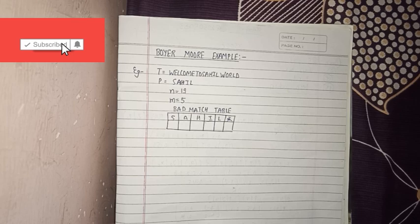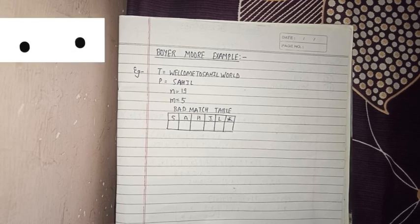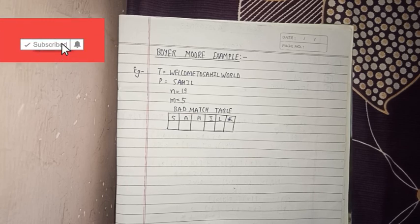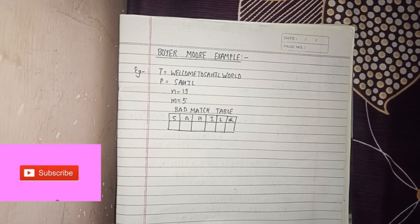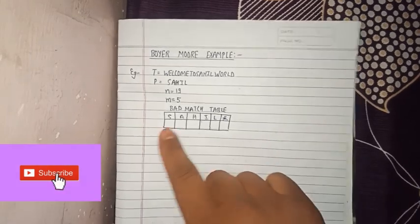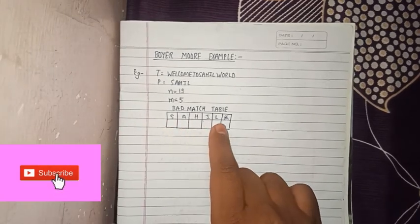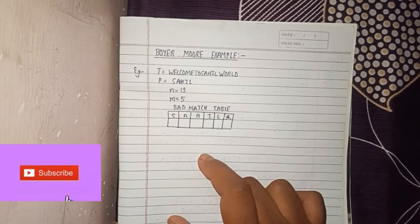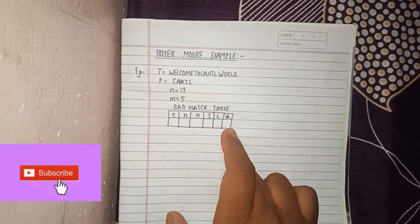Before doing the Boyer-Moore example, we have to find out the bad match table. As discussed in the previous video about the algorithm, we use the bad character heuristic. We need to find out the bad match table. Since there are five letters in the pattern, in the table we denote them as s, a, h, i, n, and we will use the star pattern.